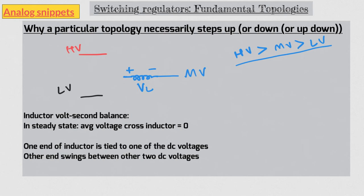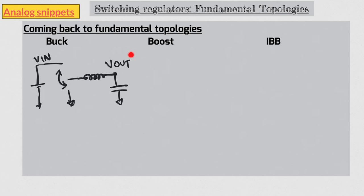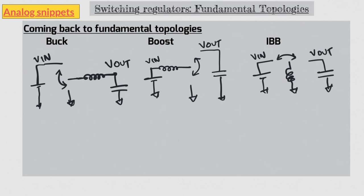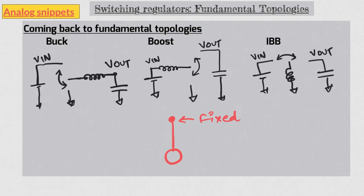So here is the important takeaway: the fixed end of the inductor is always connected to the middle voltage. Applying this to our fundamental topologies — in case of buck, the fixed end is connected to V_out, so V_out must be the middle voltage, meaning V_in is higher and ground is lower, confirming it is step-down. For boost, the fixed end connects to V_in, so V_in is the intermediate voltage, confirming it is step-up. For IBB, the fixed end is ground, so with a positive V_in the only way to satisfy volt-second balance is to make V_out negative, explaining the inverting nature. It's very much like a pendulum or swing with one end pivoted to a fixed place and the other end swinging either way — giving an intuitive feel for why each topology behaves as it does.